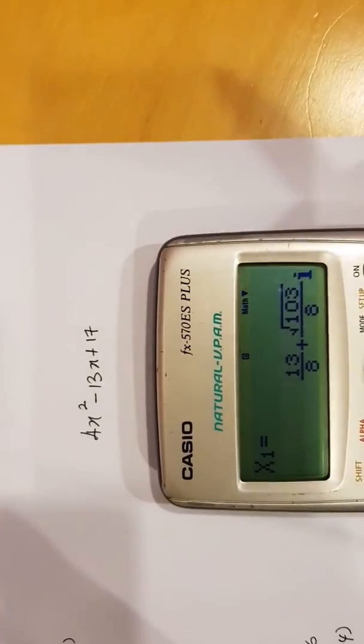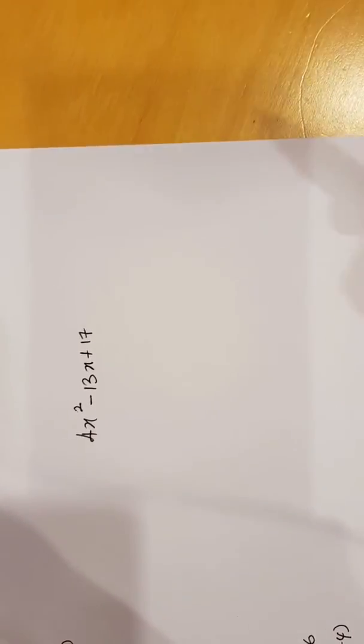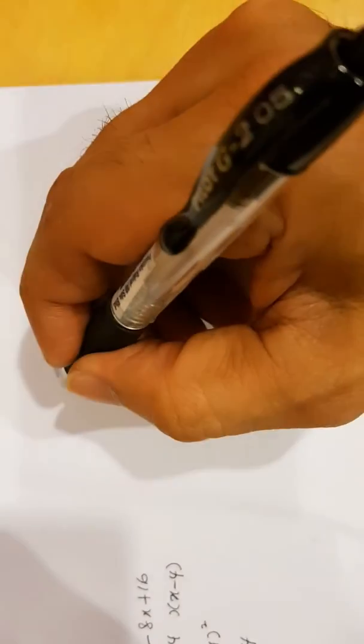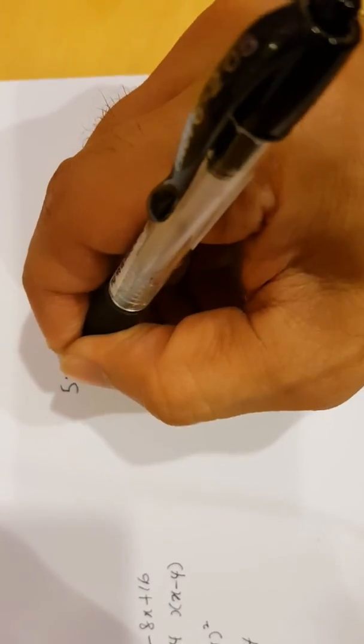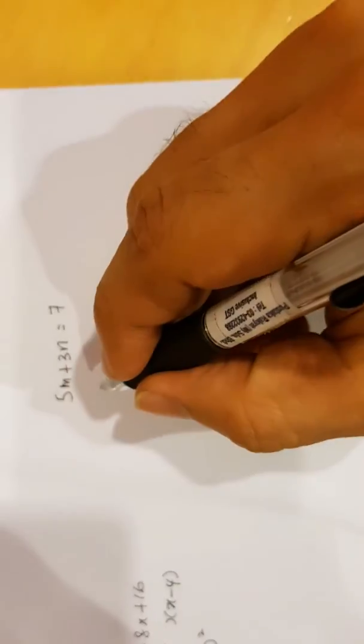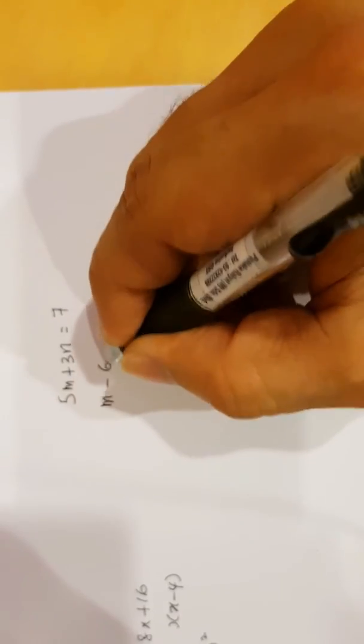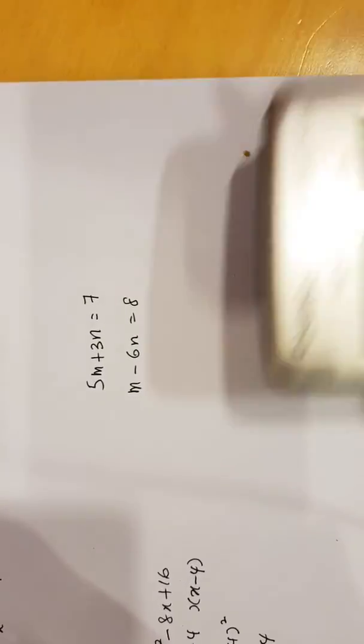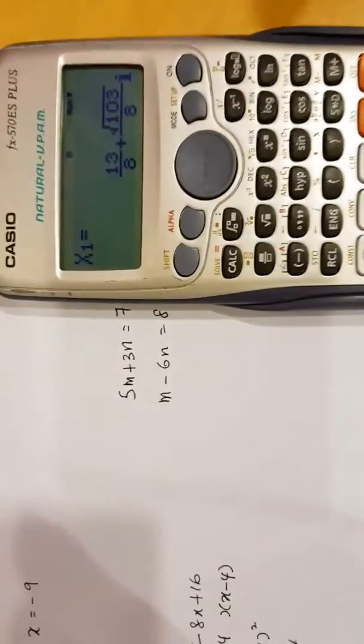I will also show you guys how to use this calculator to do simultaneous linear equation. If you remember, say if you are given 5M plus 3N equal to 7. That's one equation.